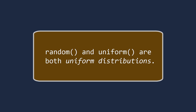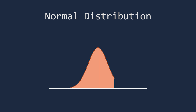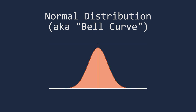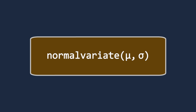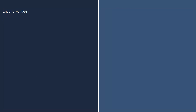But there are other distributions where some groups of numbers are more likely to be chosen than others. The most widely encountered is the normal distribution, also known as the bell curve. A normal distribution is completely described by just two numbers: the mean and the standard deviation. The mean is the average — it's where the bell curve peaks. The standard deviation describes how wide or narrow the curve is. You use the Greek letter mu for the mean and lowercase sigma for the standard deviation. To generate random numbers from a normal distribution, you use the normalvariate function. When you call this function, you must pass in both the mean and the standard deviation.